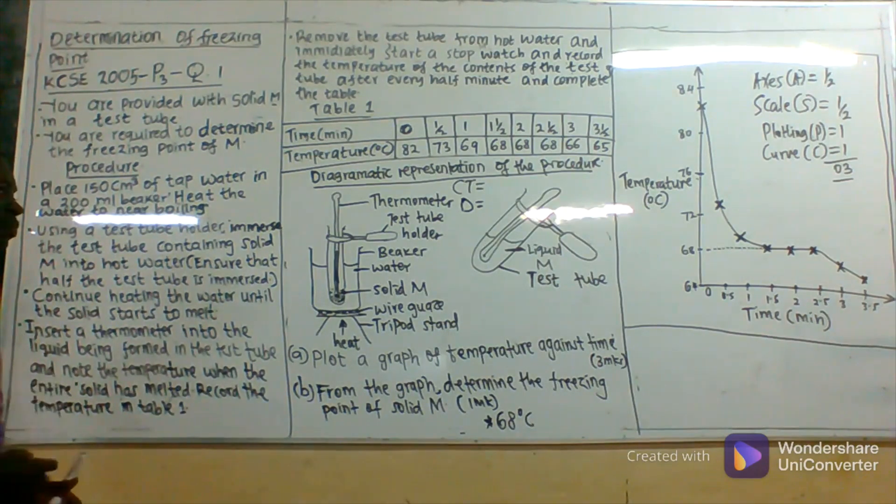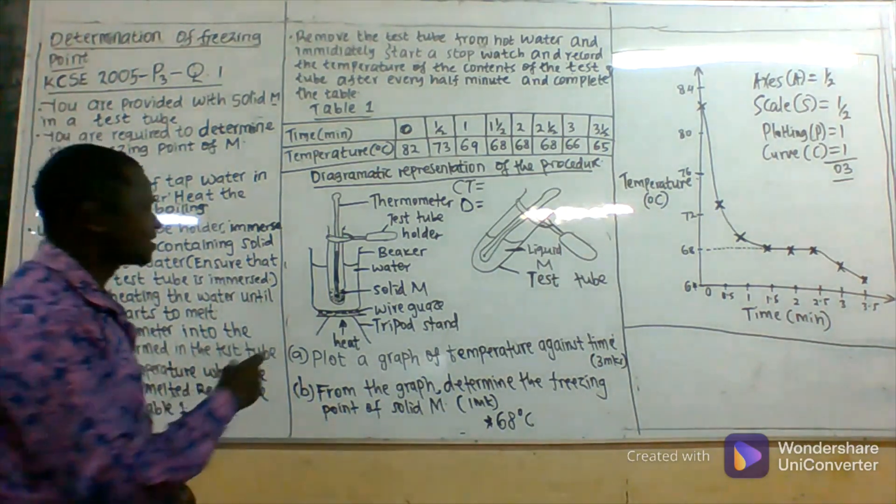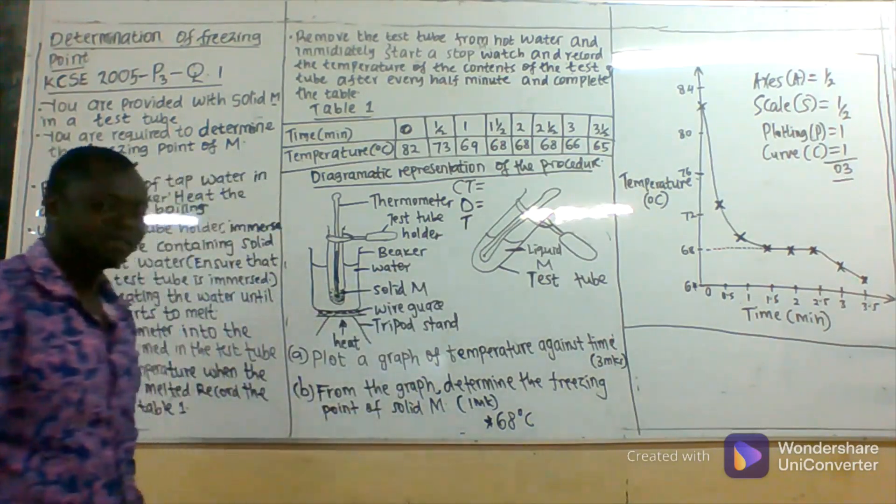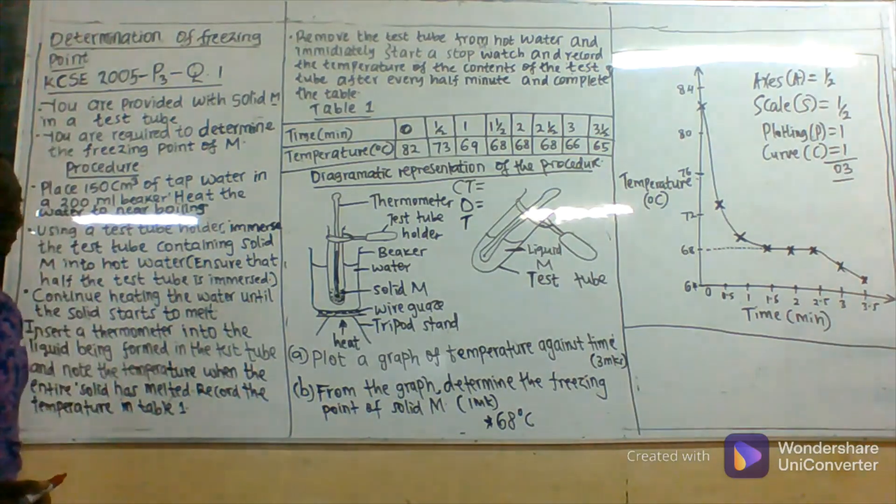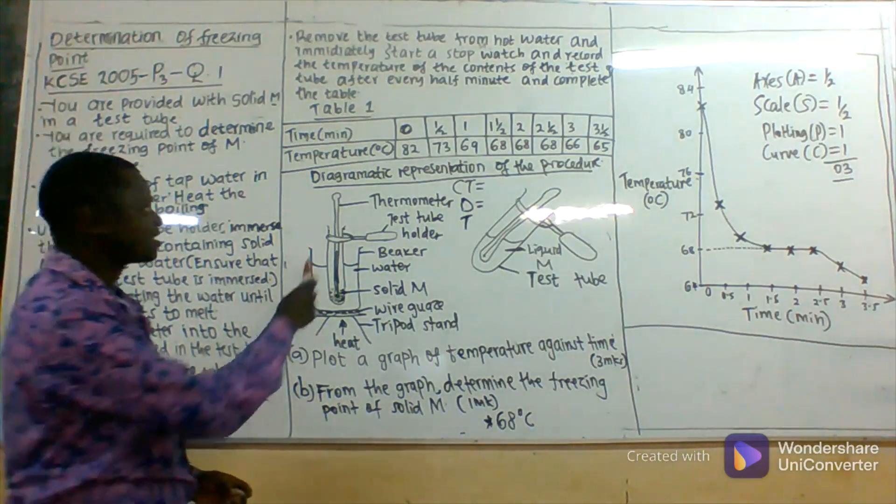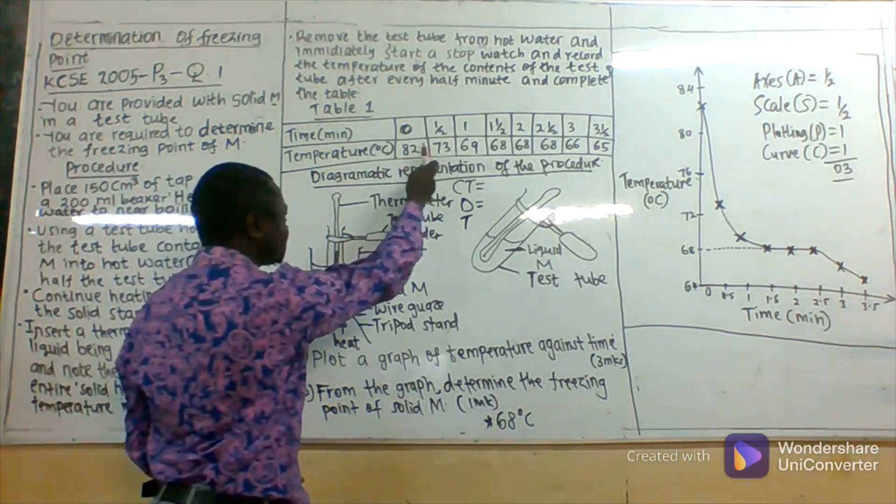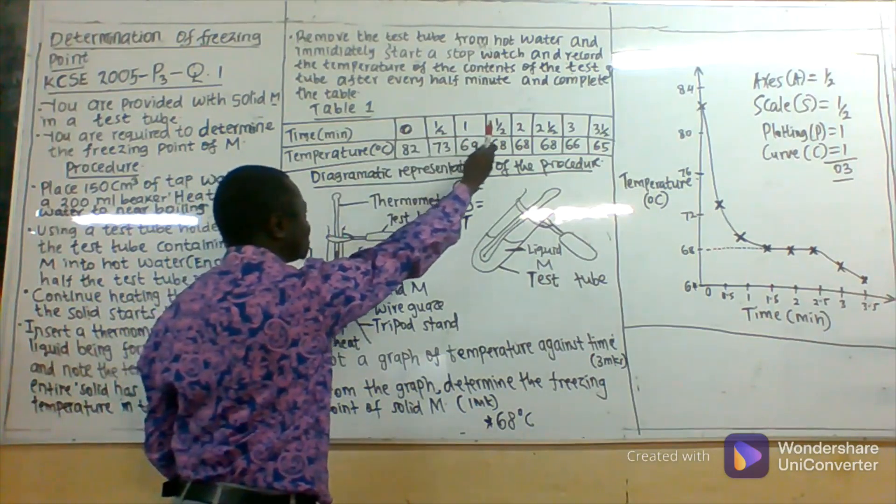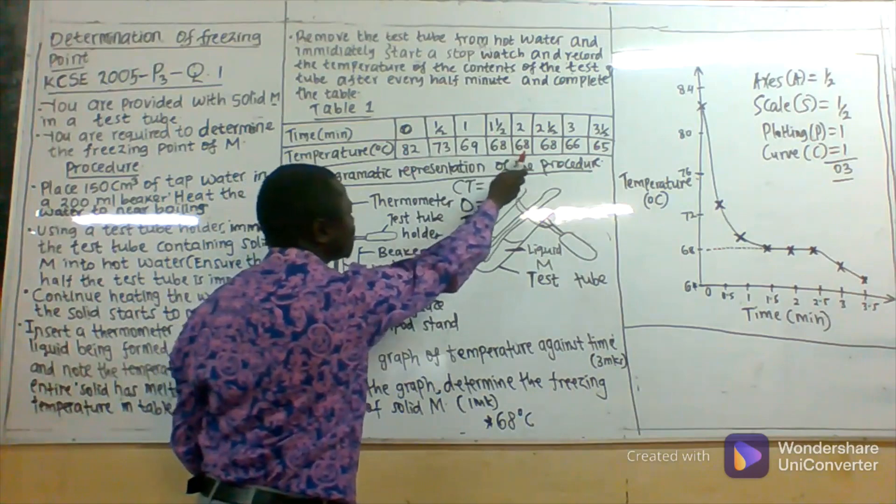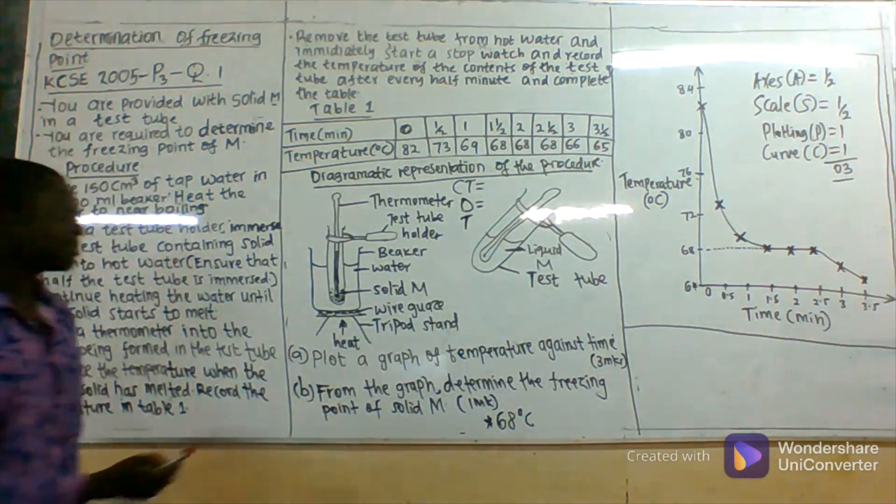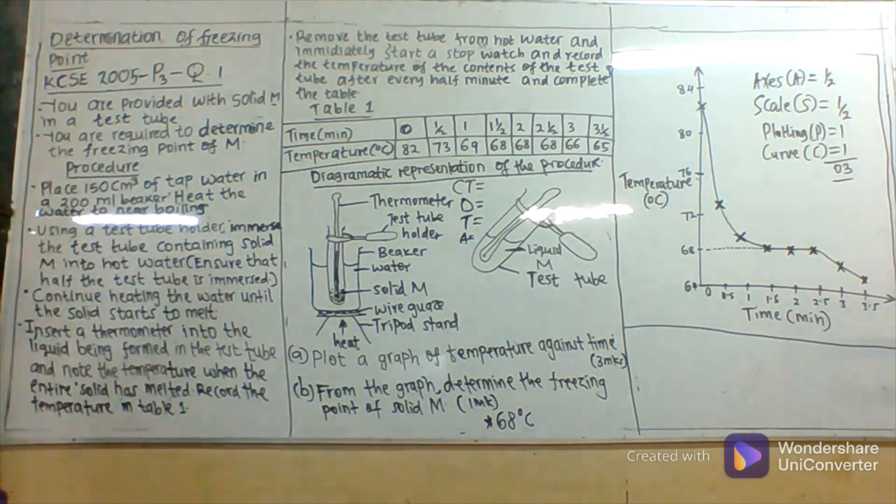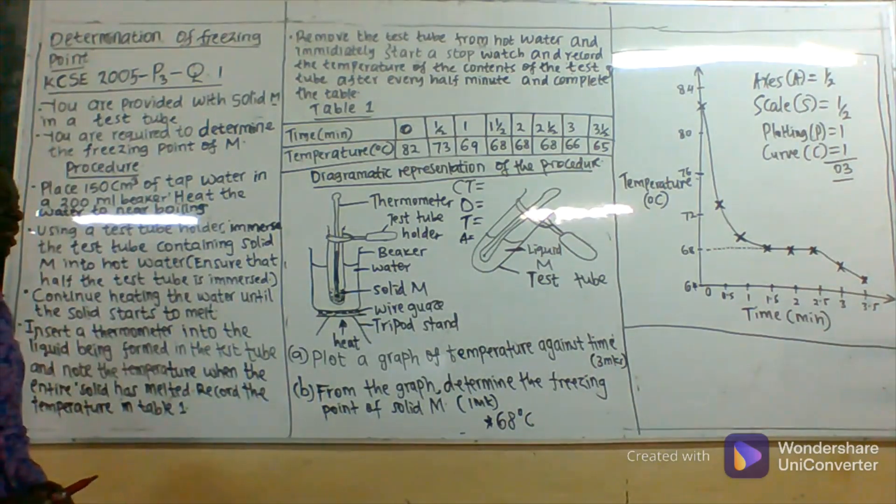There is a mark for trend. If you just followed the procedure well and carefully, the temperature was supposed to drop from time zero to time one and a half, then remain constant, then drop. That was the trend that was expected. After that, students were told to plot a graph of temperature against time.